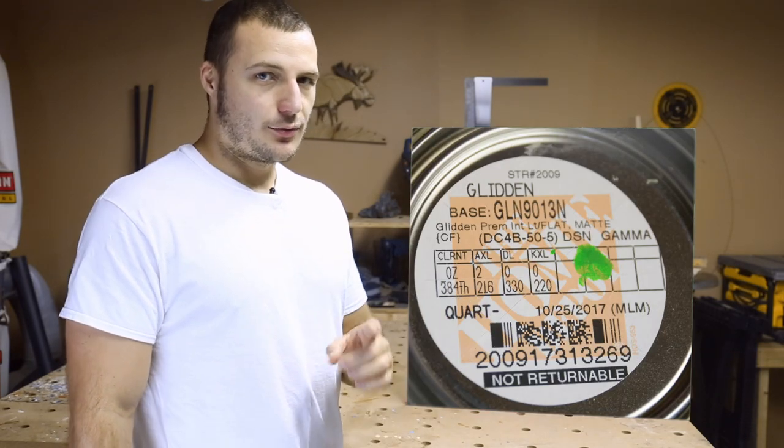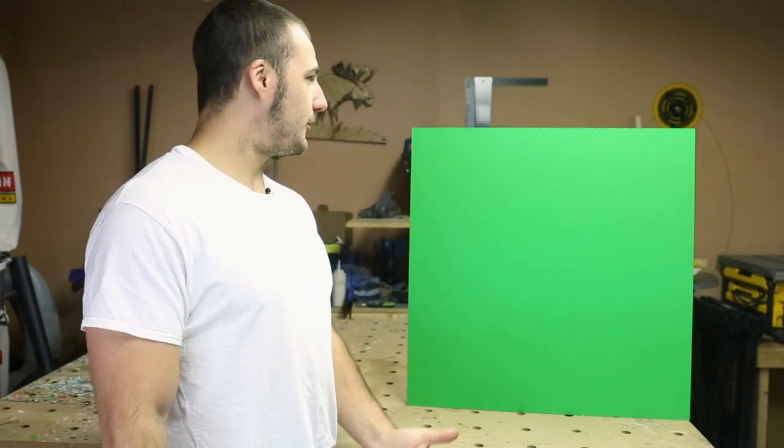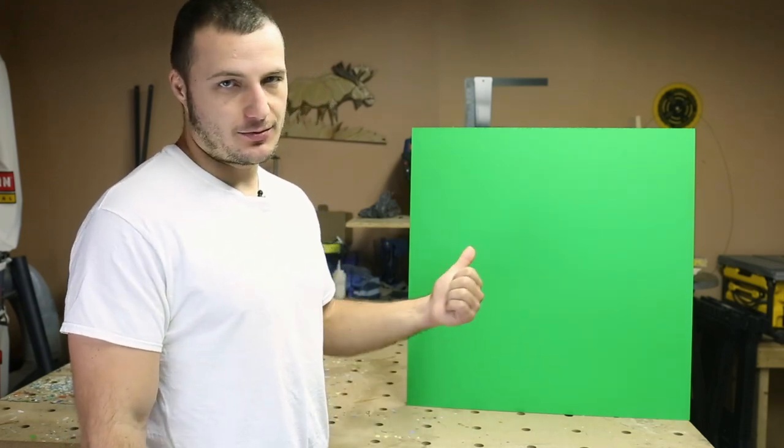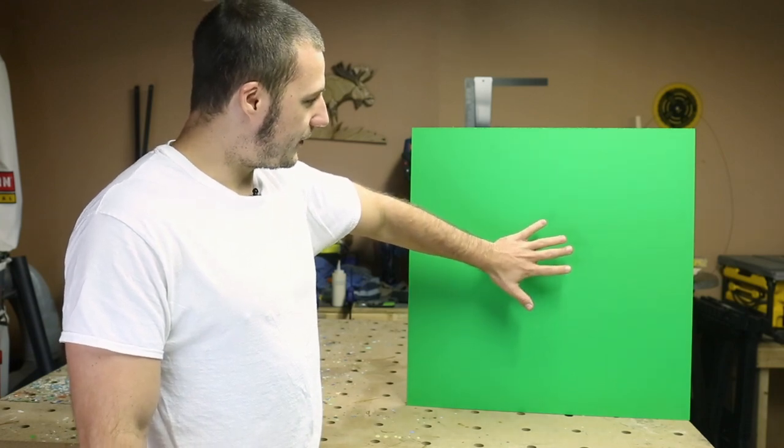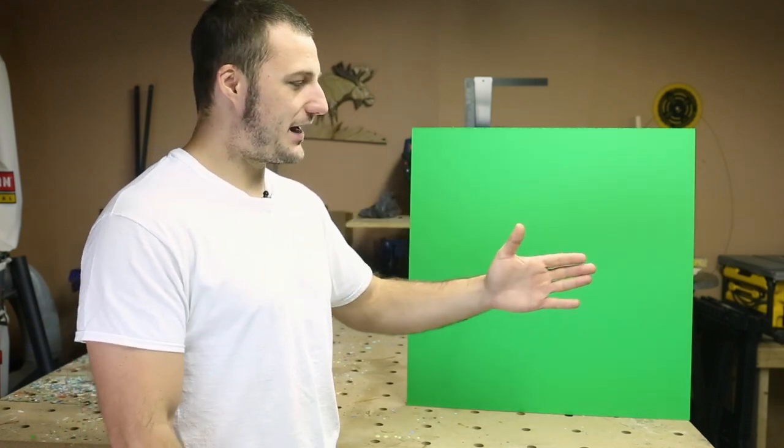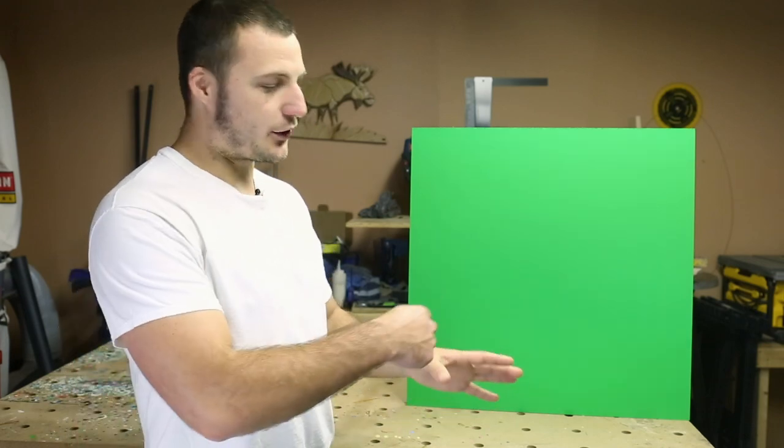Now there are a couple things I want to mention when you're lighting these things. Make sure you don't put too much light on this because if you put too much light on it, it's going to rebound the light back onto your subject, kind of like a mirror, and then you're going to get a green fringe. Sometimes you see this on news anchors that are giving the weather. They just didn't get the lighting right before the broadcast and you'll have a fringe around their hands and their arms.